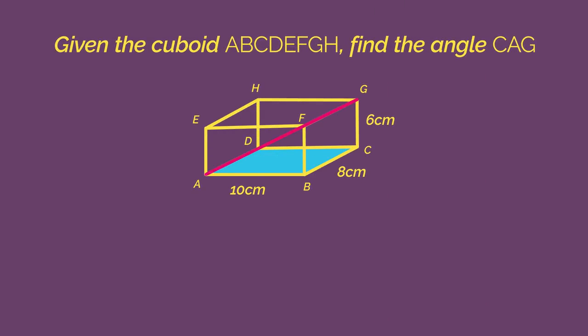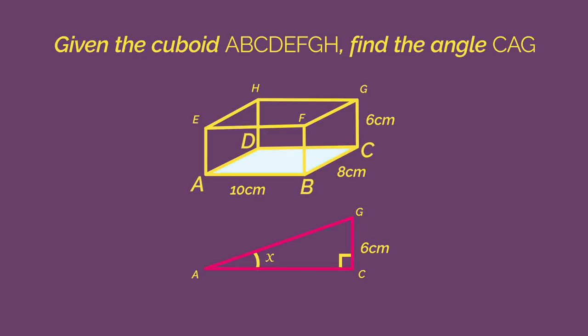Start by drawing your 2D right angle triangle CAG. We know it's a right angle because CG is a vertical line and CA is a horizontal plane. Before we can find angle X, we need to find the length of AC.